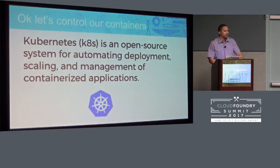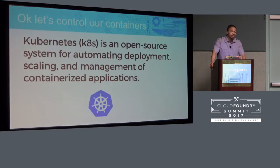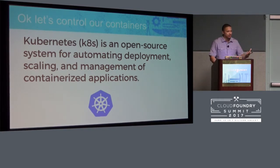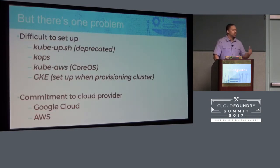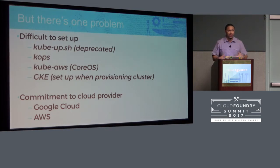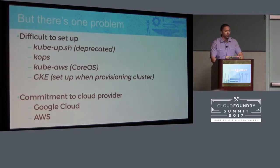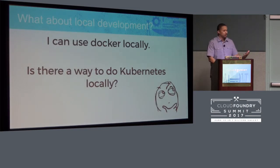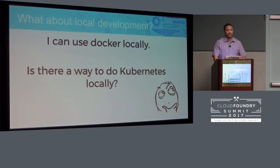We control containerization projects with an open source thing called Kubernetes — an open source system for automating deployment, scaling, and managing containerized applications. This tool helps restart containers when they fail and gives you status on your applications. But if you're trying to set this up in production on a cloud service, it's not really easy. A lot of people face this coming into Kubernetes: Docker is fine, but getting into Kubernetes feels like too much setup.